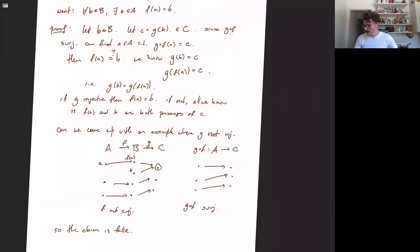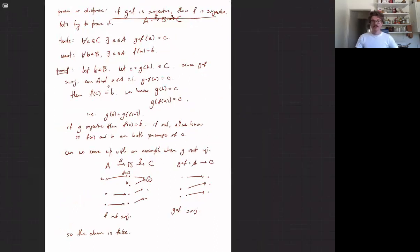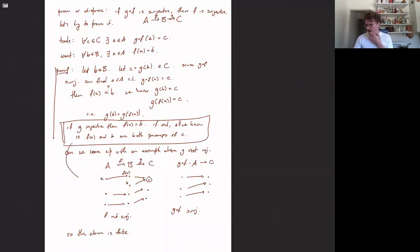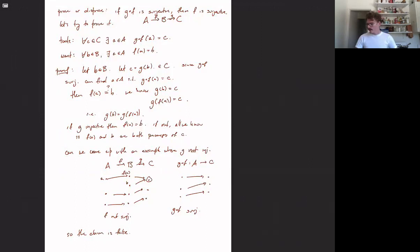So we have come up with a counterexample. The claim that we started with is false: if g∘f is surjective, it is not necessarily true that f has to be surjective. And the train of thought — the way we got there — was by starting by trying to prove it, then identifying what prevented us from proving it, and then using that to inspire an example where it doesn't work. So this is a fairly simple example, but it's a very good example of the kind of reasoning you will find very helpful: if you don't know how to prove something, work in both directions, see what is getting you stuck, and see if you can use that as a tool to go the other direction.